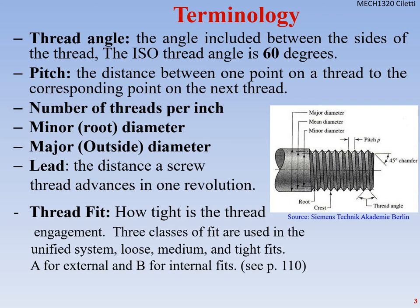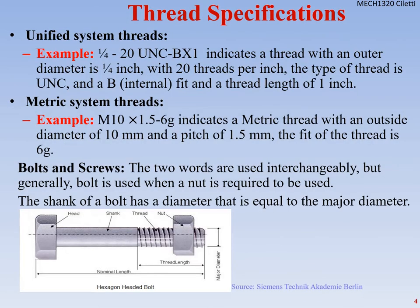Let's look at how we label threads. We have 1/4-20 UNC-2B×1. That indicates a thread with an outer diameter of one-quarter inch, with 20 threads per inch, type UNC (the coarse series), B meaning it's an internal fit, and a thread length of one inch.